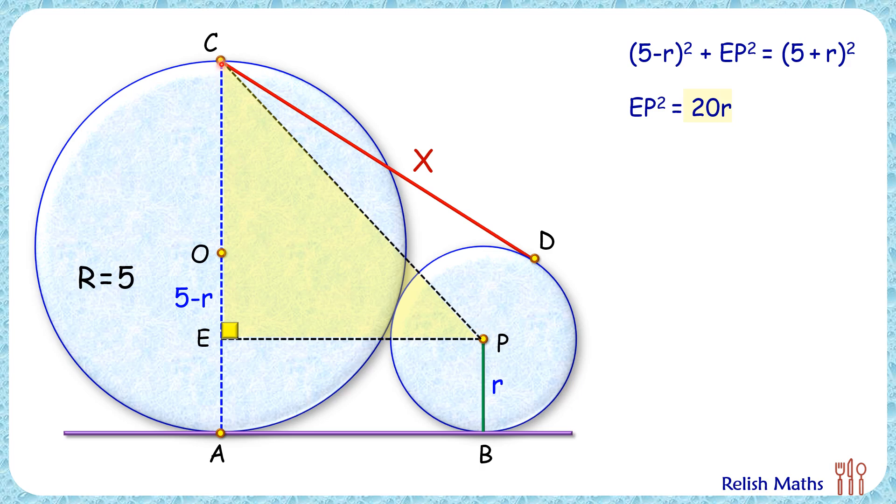we'll get by Pythagorean theorem CE² plus EP² is CP². Now here the length CO is 5 centimeters, that's the radius, and thus full length CE will be 10 minus r, and CE² is (10 minus r)².